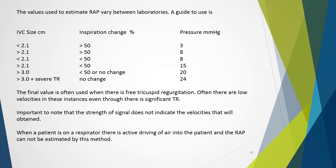A table estimates right atrial pressures depending on IVC findings. When IVC size is normal (less than 2.1 cm) with greater than 50% respiratory collapse, RAP is 3 mmHg. When IVC is greater than 2.1 cm but still has greater than 50% collapse, or is normal size with less than 50% collapse, RAP is 8 mmHg. If enlarged with less than 50% collapse, RAP is 15 mmHg. If significantly dilated with reduced or no change, RAP is 20 mmHg.